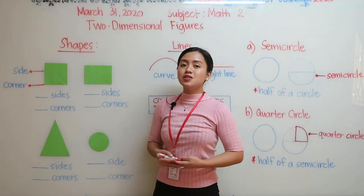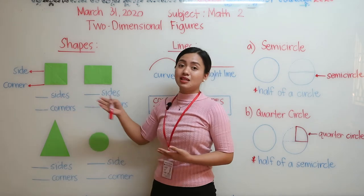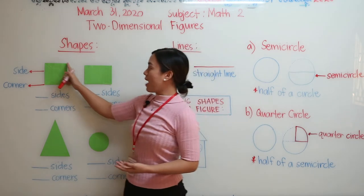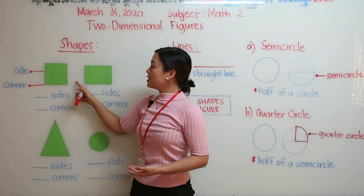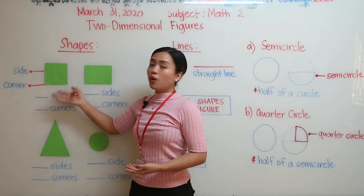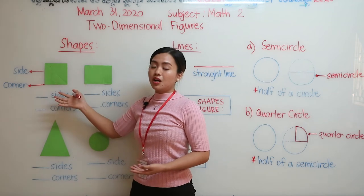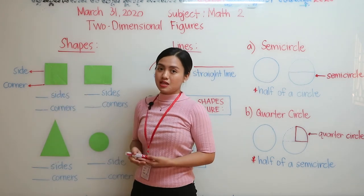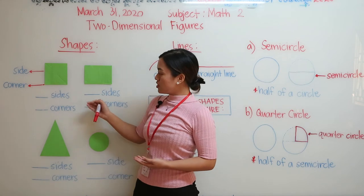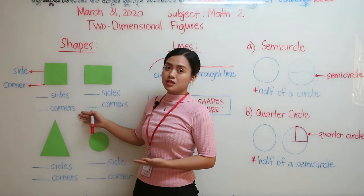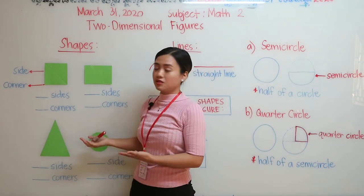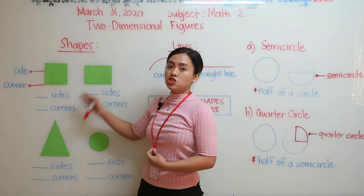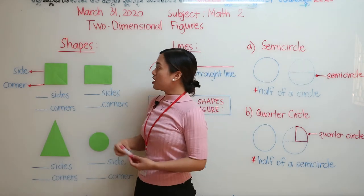The sides of the shapes are the lines, and the corners are where two sides meet. Now let's try to count the sides and the corners of each of the shapes that we have here.